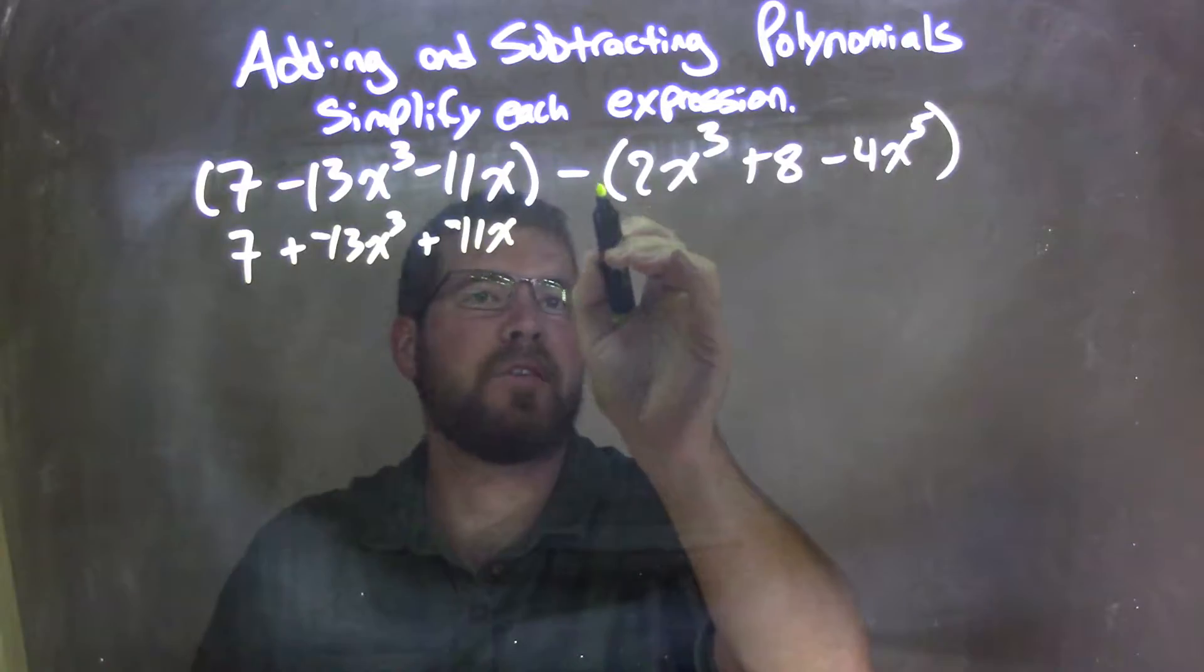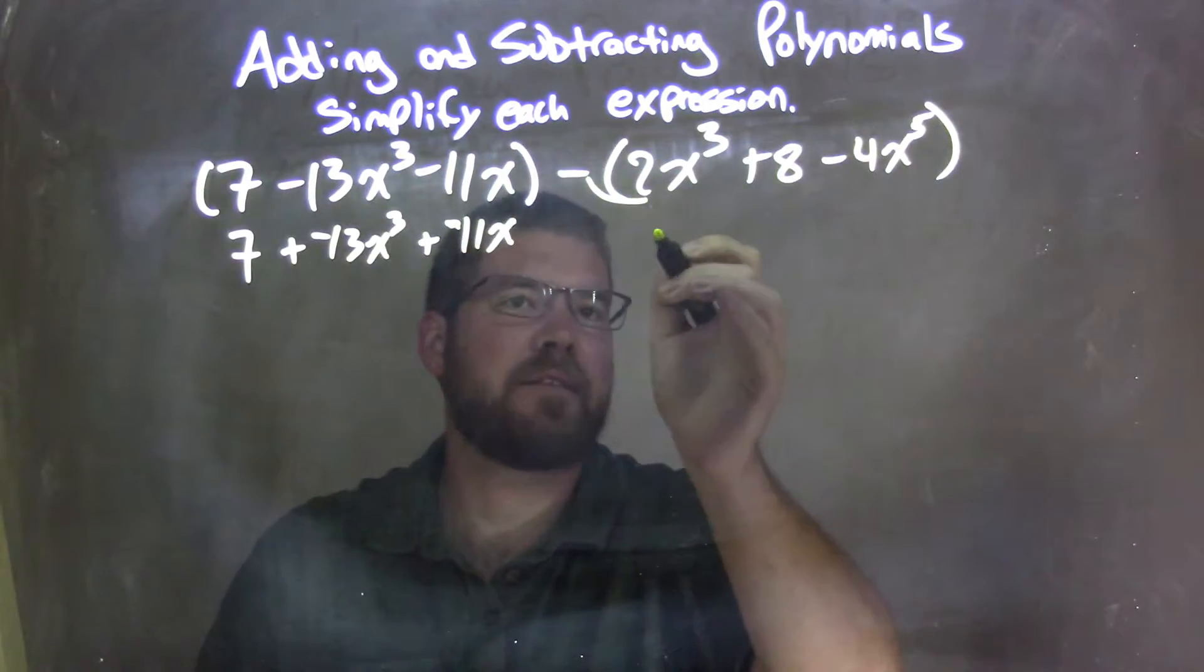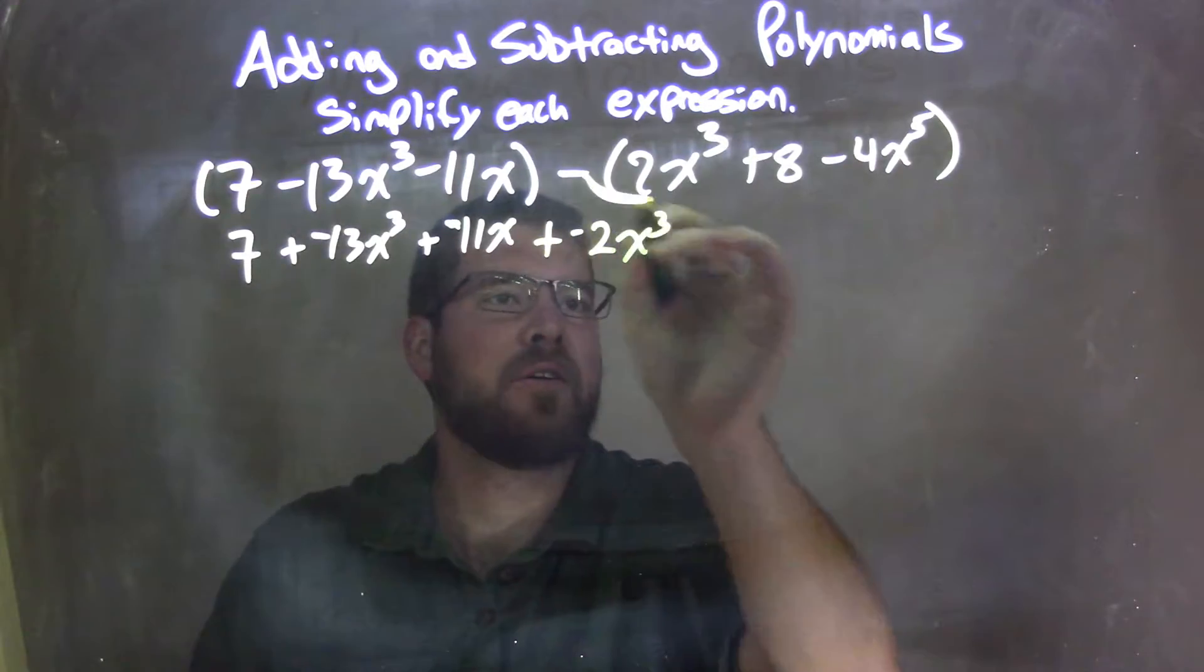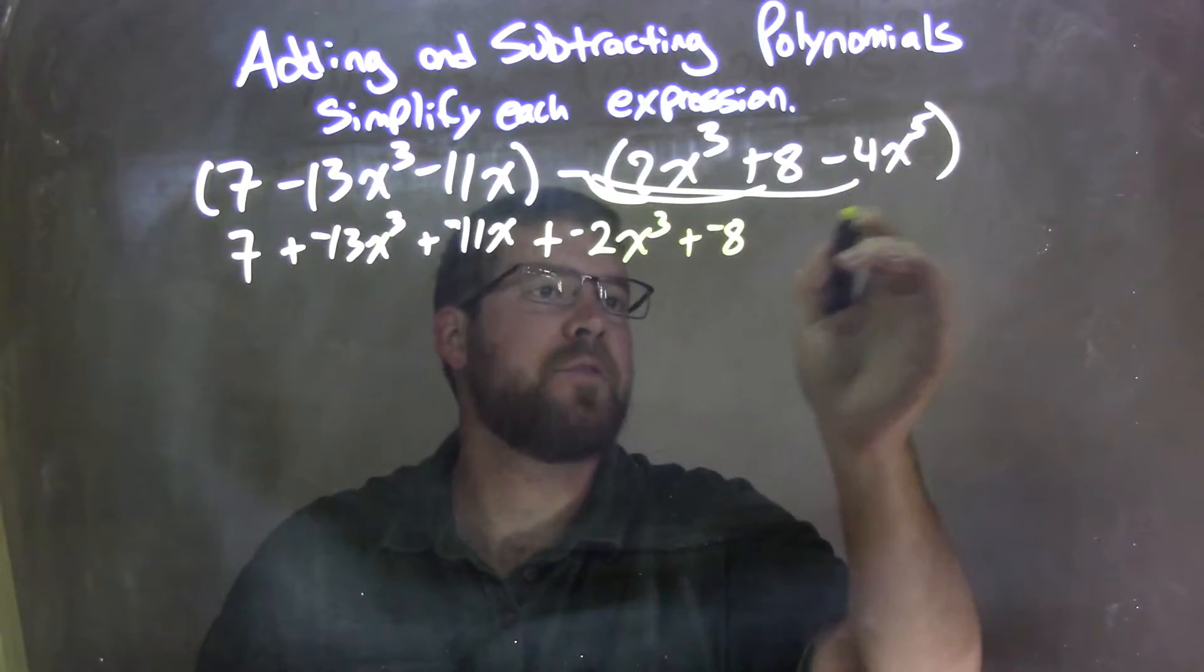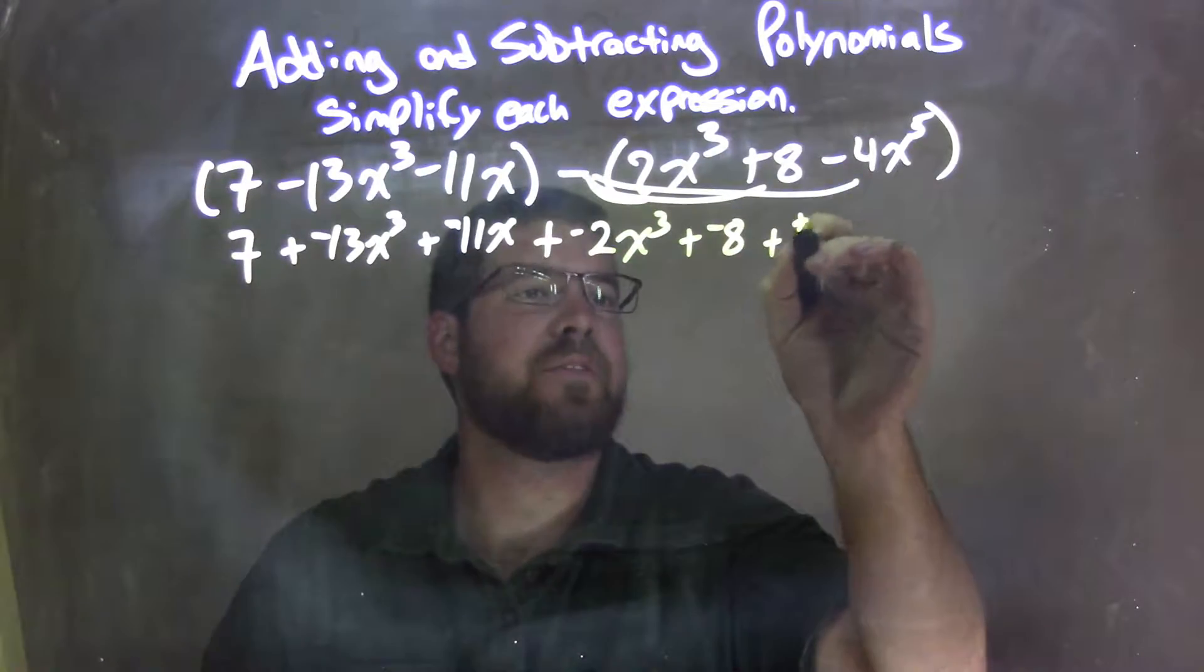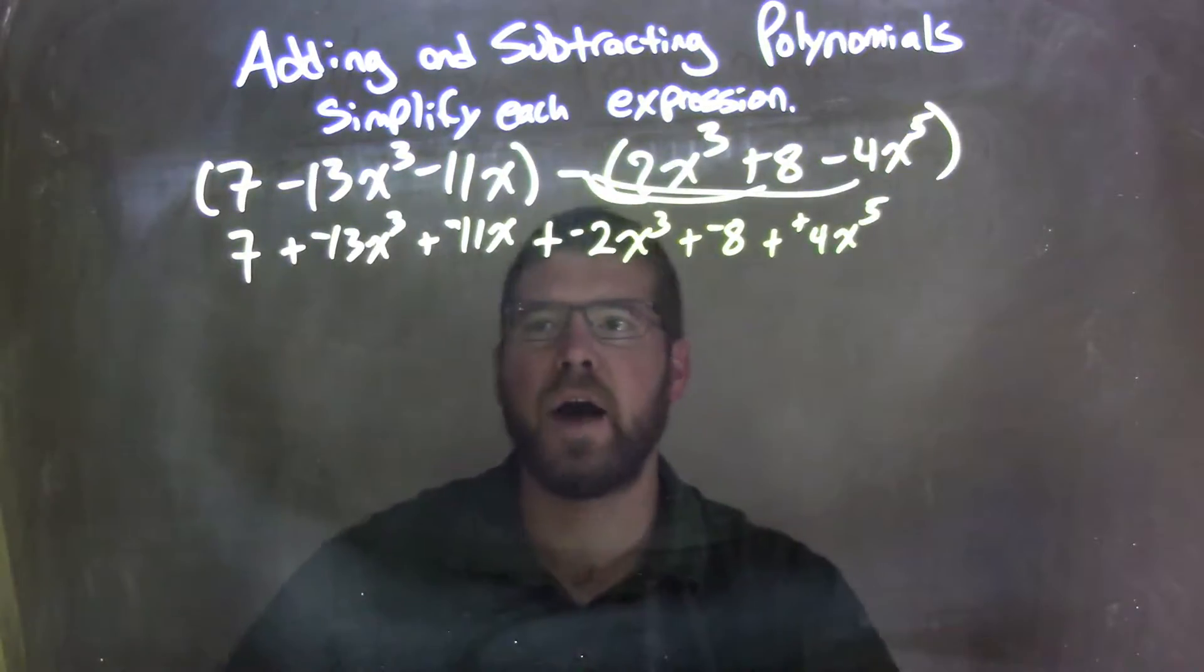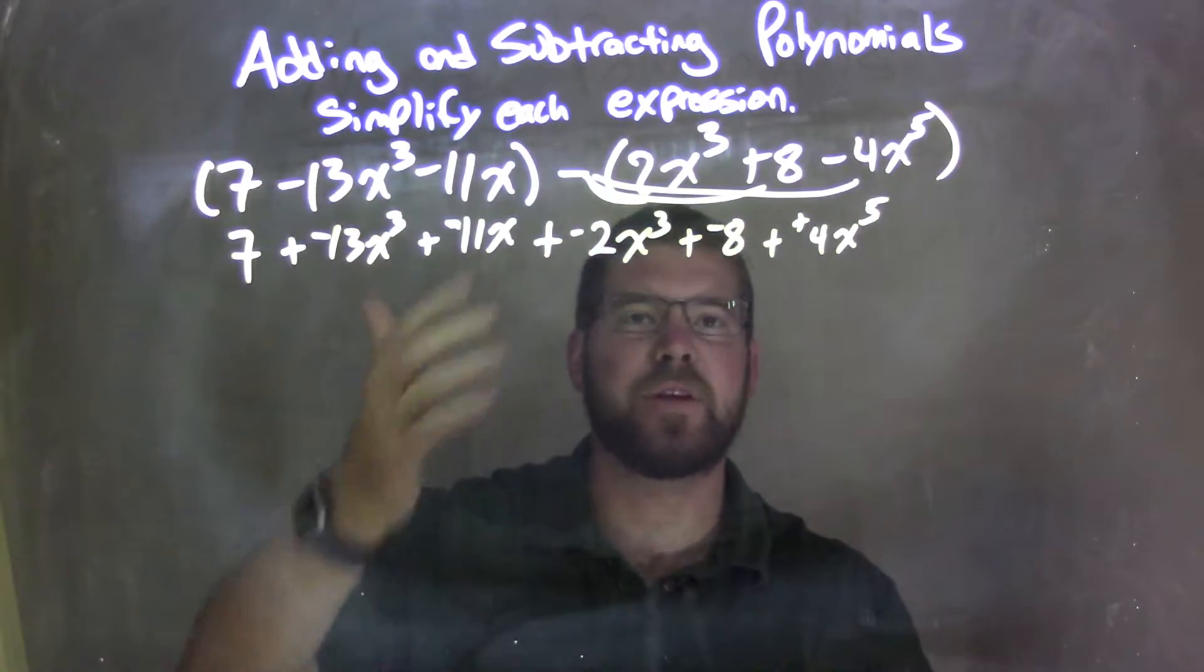Then I'm going to distribute this minus sign across, but when I do that, I make everything adding a negative. So subtracting a 2x to the 3rd is adding a negative 2x to the 3rd. Subtracting an 8 is adding a negative 8. Subtracting a negative 4x to the 5th is adding a positive 4x to the 5th. So now I have all addition here, and there are positive and negative numbers in different degrees.